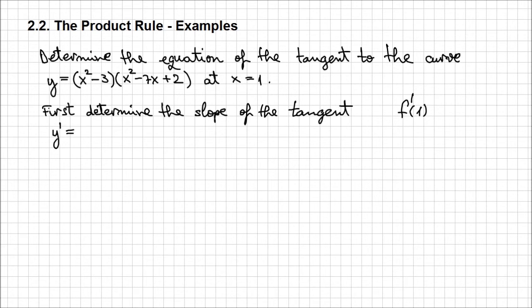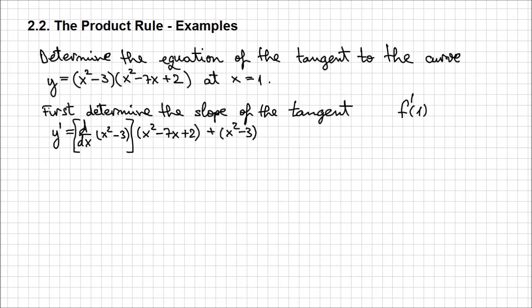I'm going to calculate y prime as d/dx of — and as we see, it's a product — so I'm going to apply the product rule. First, we differentiate the first expression: d/dx of x squared minus 3, times the second expression unchanged, which is x squared minus 7x plus 2. Plus, the first expression unchanged, x squared minus 3, times the derivative of the second expression, d/dx of x squared minus 7x plus 2.